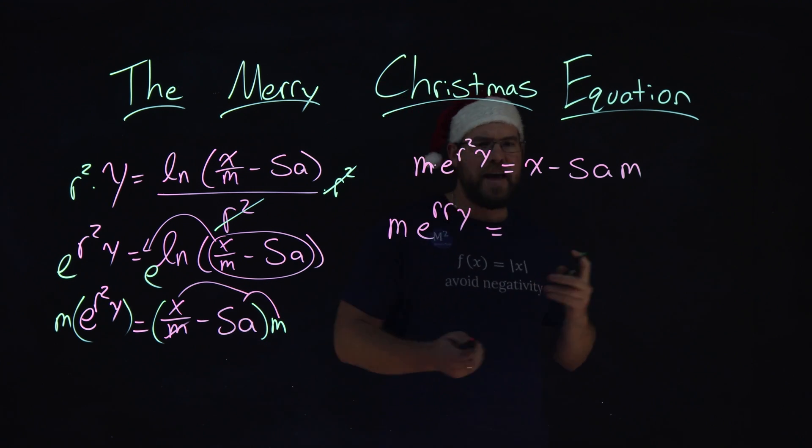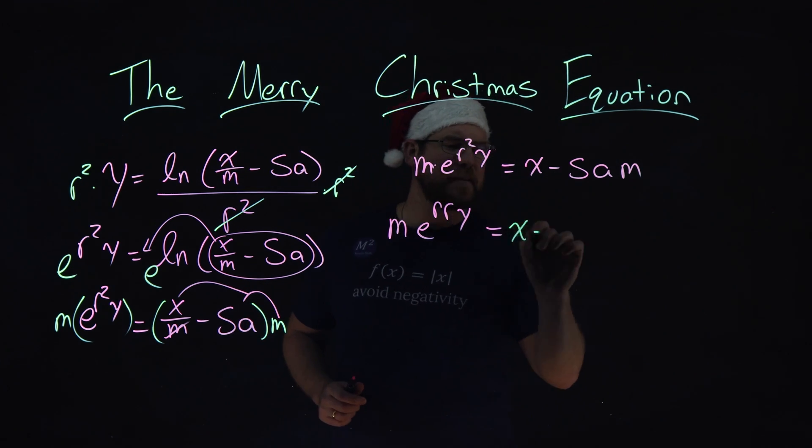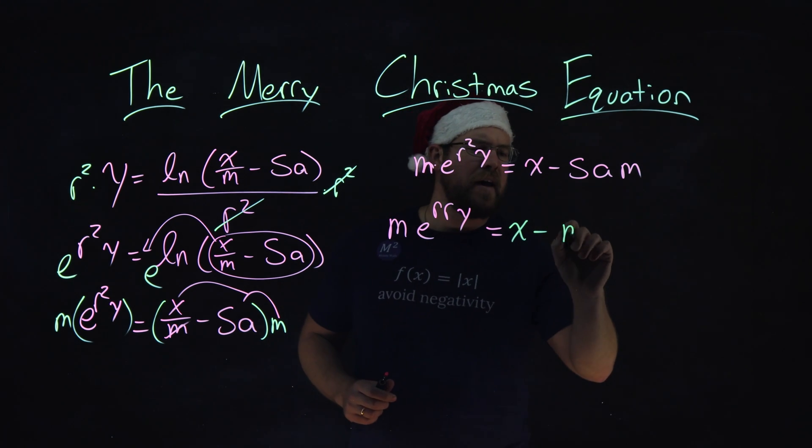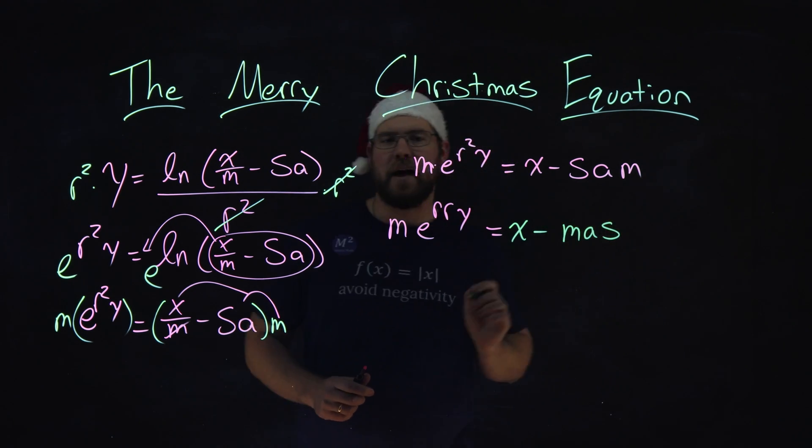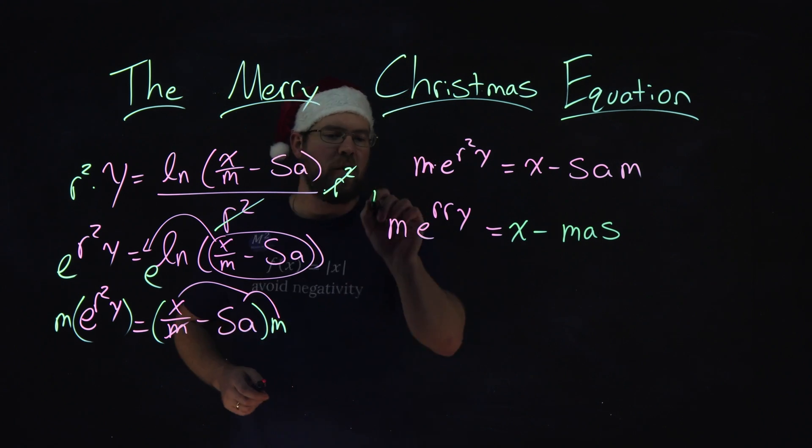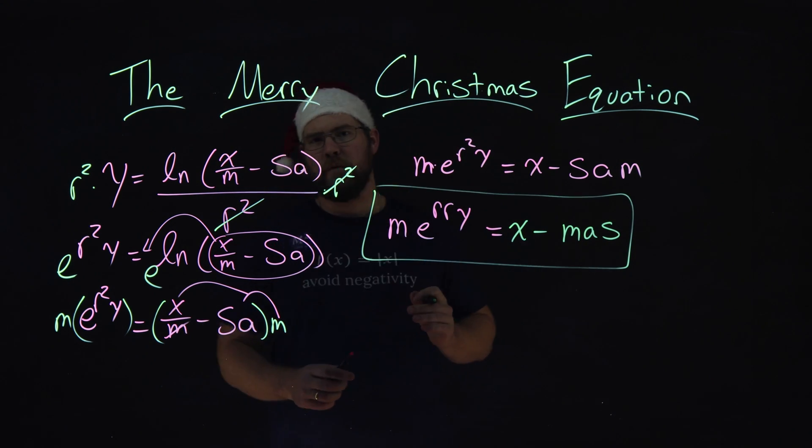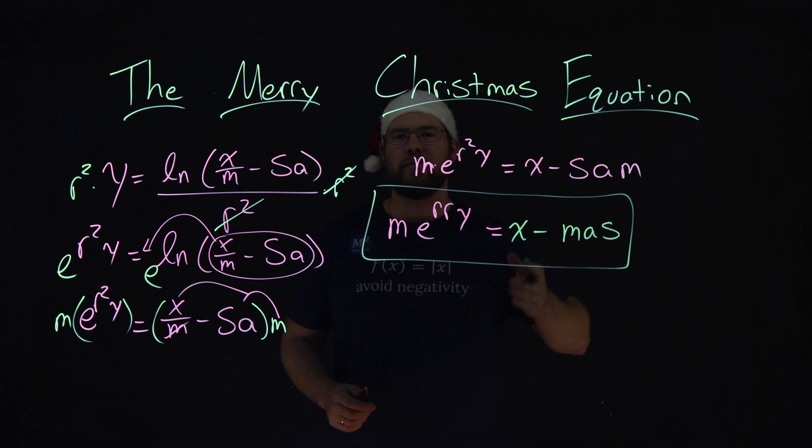We have an x minus, well, let's rearrange these letters, m times a times s. And there we have the wonderful, the beautiful, merry x-mas equation.